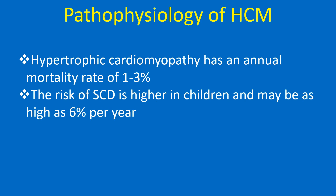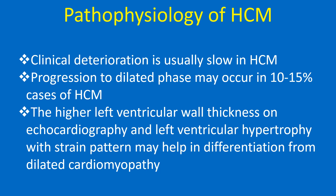Natural History of HCM: Hypertrophic cardiomyopathy has an annual mortality rate of 1–3%. The risk of sudden cardiac death is higher in children and may be as high as 6% per year. Clinical deterioration is usually slow in HCM. Progression to a dilated phase may occur in 10–15% of cases. Higher left ventricular wall thickness on echocardiography and a left ventricular hypertrophy with strain pattern may help in differentiation from dilated cardiomyopathy.